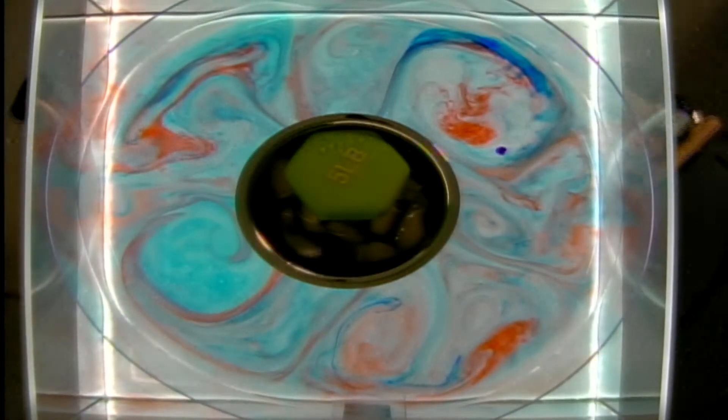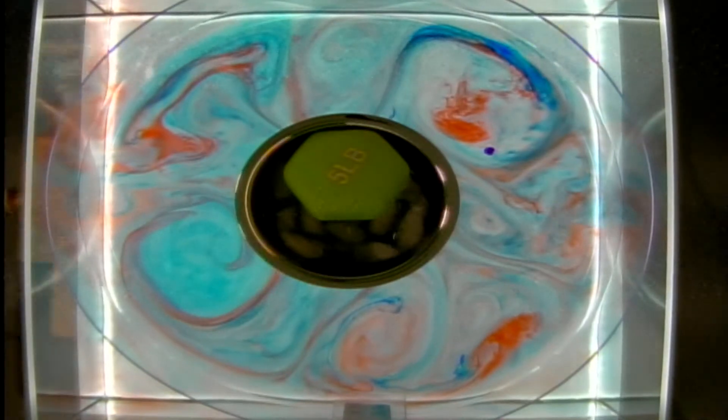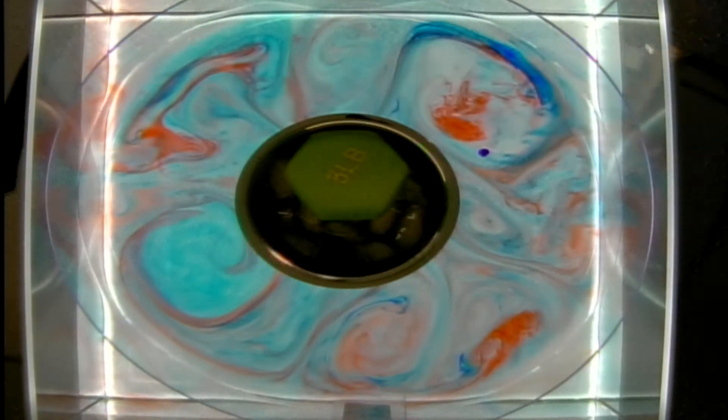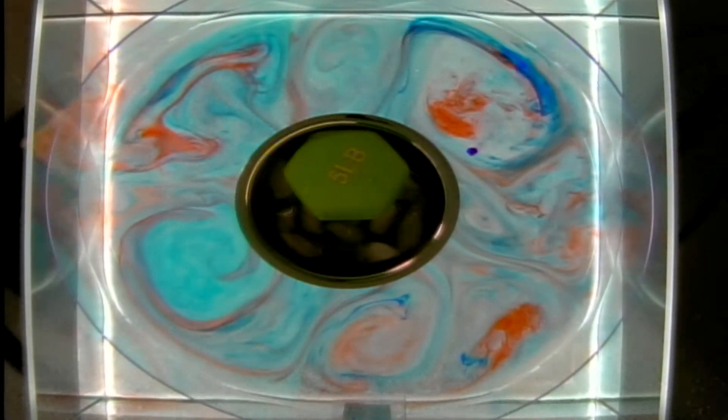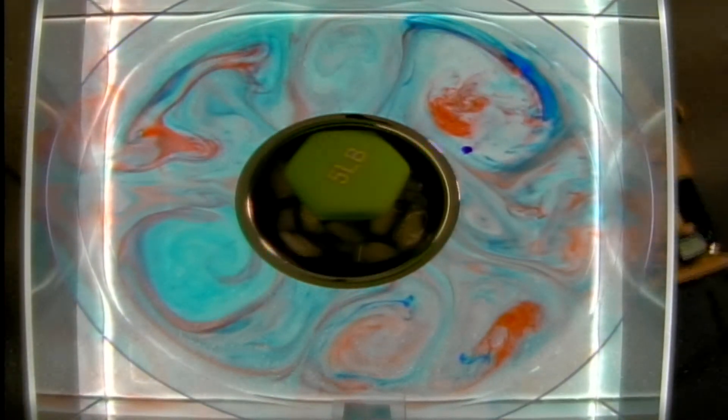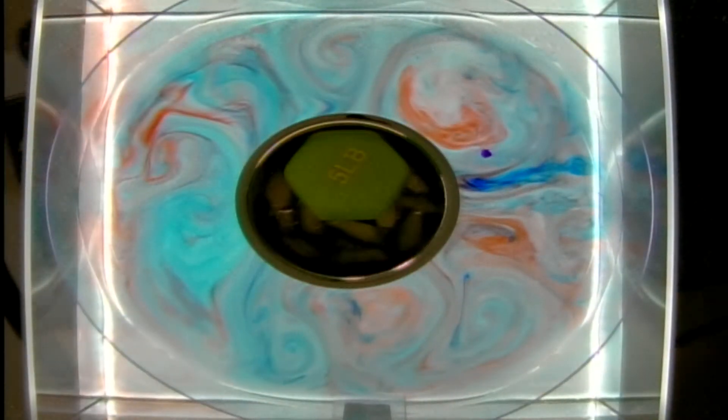The experiment in this rotating tank is analogous to a classical theoretical model for baroclinic instability called the Edie model in which we have a temperature gradient on two surfaces: the surface of the Earth and the tropopause. Here in the tank that would be the bottom of the tank and the top of the water.